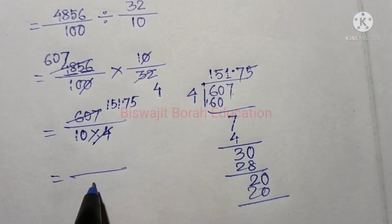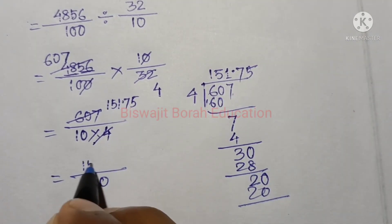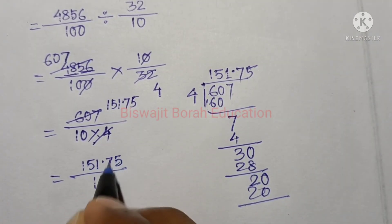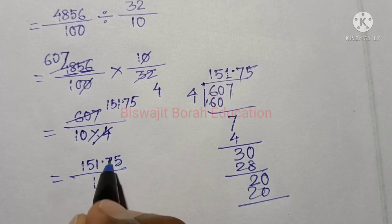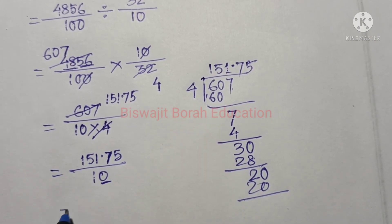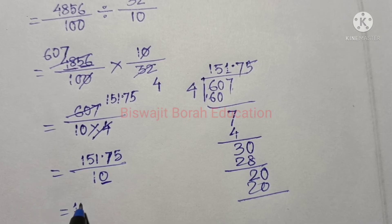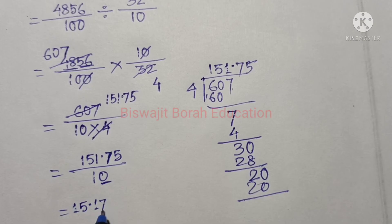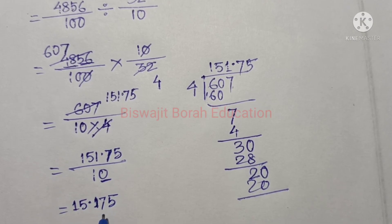15.175 — we have our 10 here. We write 10, and above we have 151.75. If we lift this decimal up, then the decimal operation gives us the result. So this is 1.5, meaning 15.75. So this is 15.175.